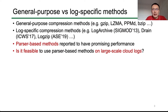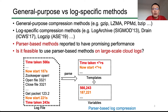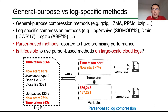In order to compress logs, there are two groups of solutions. First, we can use general-purpose compression methods such as GZIP, LZMA, and others. An alternative is log-specific compression methods including LogArchive, DREAM, and LogZip. Among them, parser-based methods like LogZip will first parse a log file into templates and variables, and compress them separately. These methods are reported to have prominent performance over others.